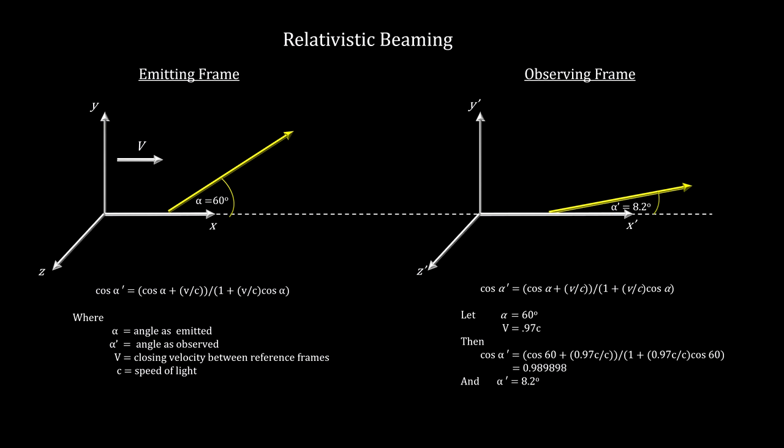Using M87C1's velocity as the velocity and 60 degrees as a sample angle, we see that the observed angle, alpha prime, is considerably smaller, at only 8.2 degrees.